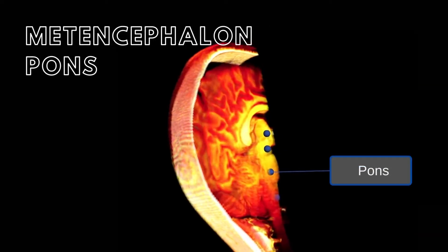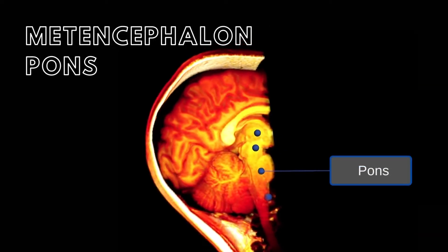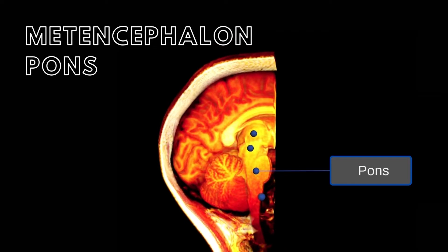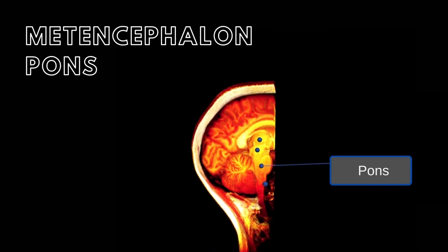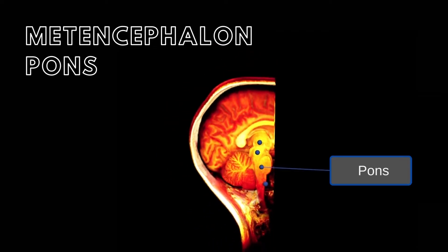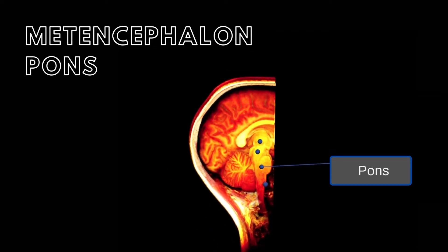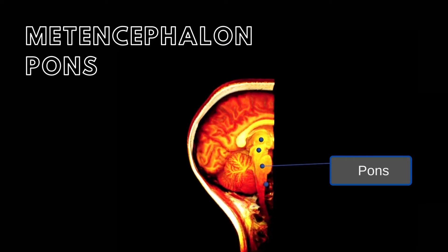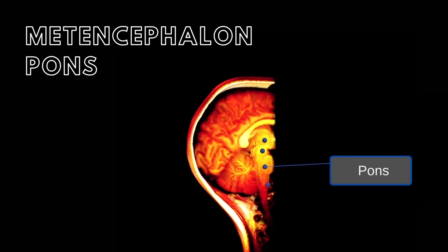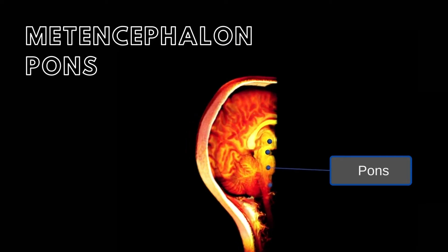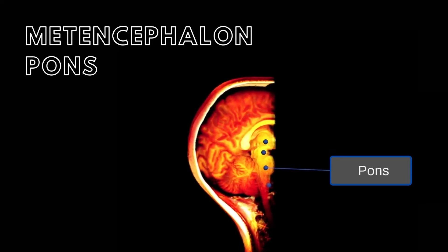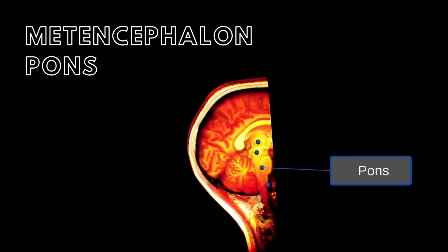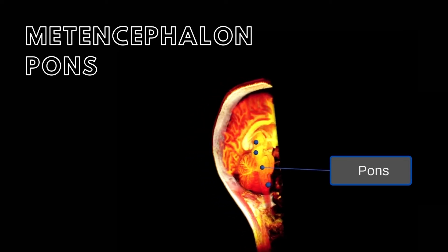The metencephalon, or pons, is located between the mesencephalon and the medulla of the brain. The pons is a relay center and consists of neuronal processes communicating with the cerebellum, pontine nuclei, and tegmentum, and the spinal cord.